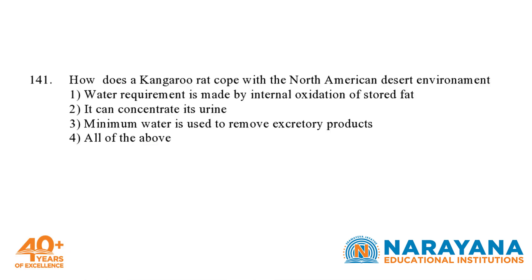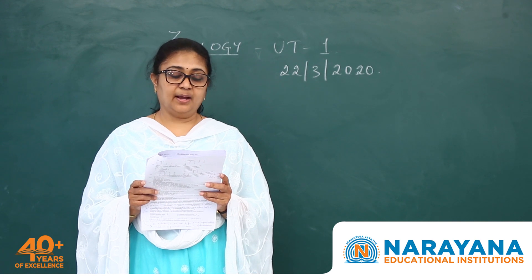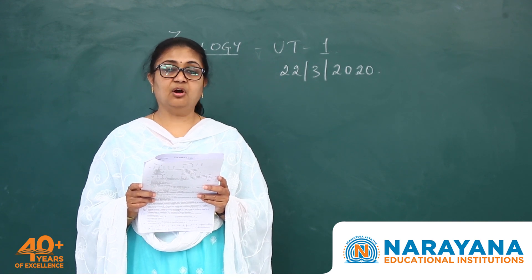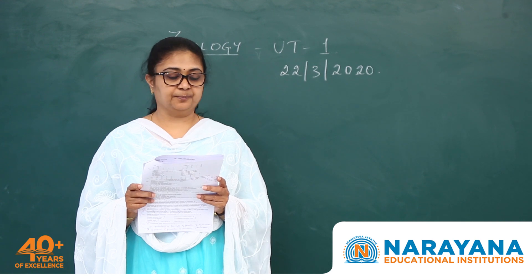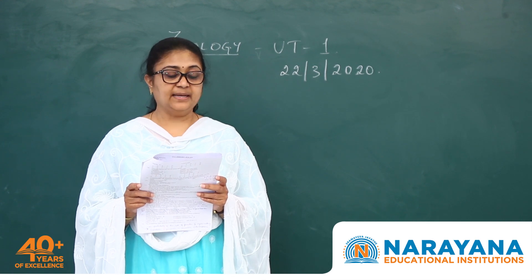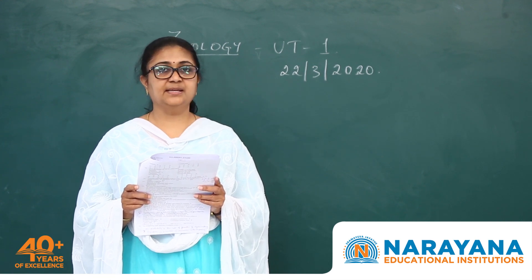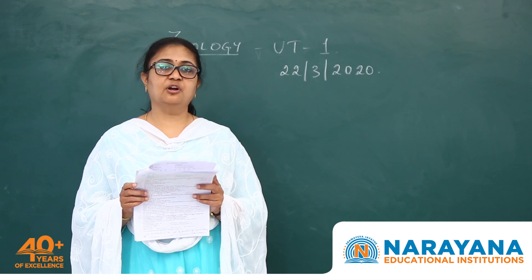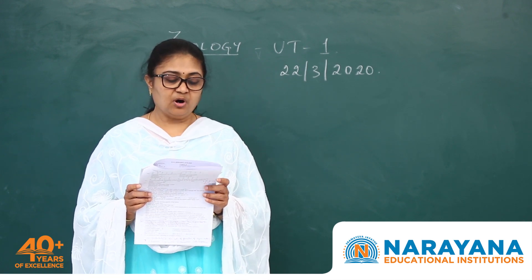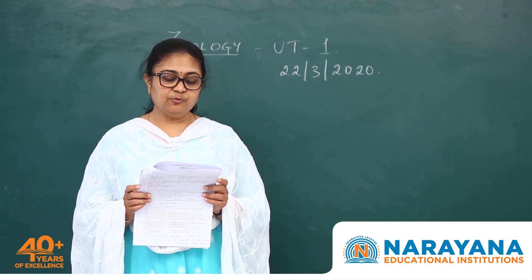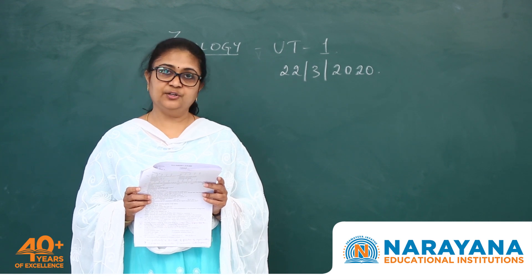Question 141: how does a kangaroo rat cope with a North American desert environment? Statement 1 — water requirement is met by internal oxidation of stored fat — is true. Statement 2 — it can concentrate its urine because it has long loops of Henle in its kidneys — is correct. Statement 3 — minimum water is used to remove excretory products — is obviously true. So the answer is option 4, all of the above.